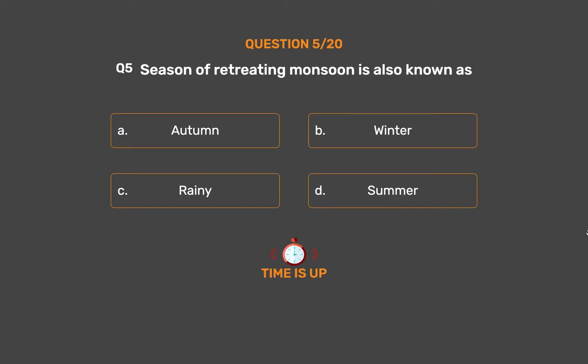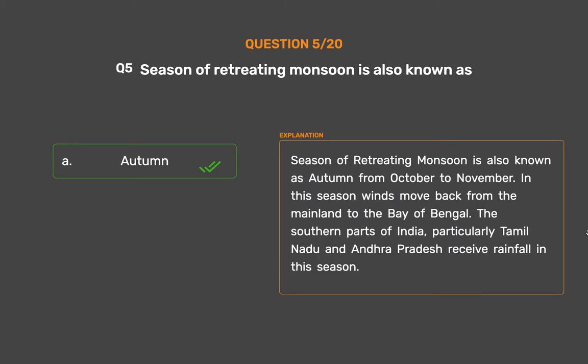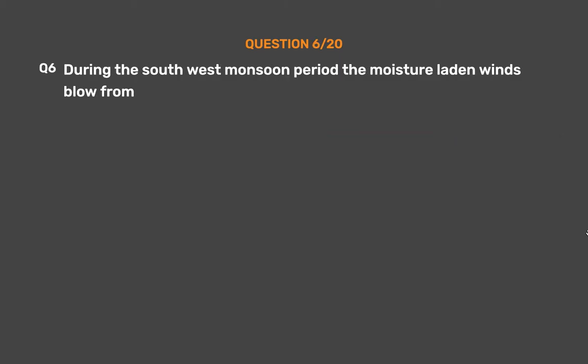The correct answer is Option A: Autumn. The season of retreating monsoon is also known as autumn, from October to November. In this season, winds move back from the mainland to the Bay of Bengal. The southern parts of India, particularly Tamil Nadu and Andhra Pradesh, receive rainfall in this season.